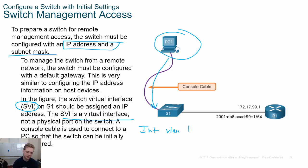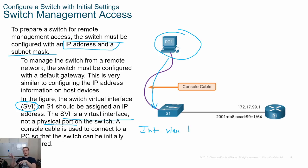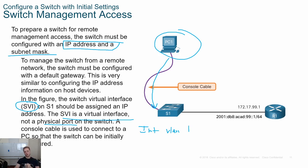The SVI is a virtual interface and is not a physical port. Imagine a port connected inside the switch that you can't see — it's connected to the backplane directly. It's there but not really visible or tangible. It's an interface, but it's not a port.